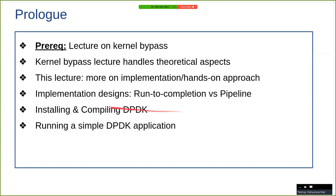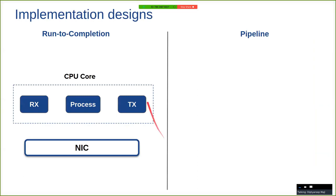In this lecture, we will first talk about the implementation designs, then we will see how to install and compile DPDK, and finally we will give a demonstration by running a simple DPDK application. Any DPDK application can be broadly classified into either of the two designs: it can be either run-to-completion design or it can be pipeline design.